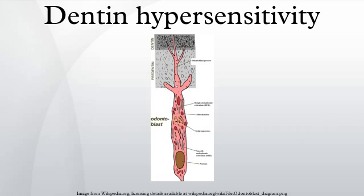Electrical — electric pulp testers. Mechanical/tactile — dental probe during dental examination, periodontal scaling and root planing, toothbrushing. Osmotic — hypertonic solutions such as sugars. Evaporation — air blast from a dental instrument. Chemical — acids, for example dietary or gastric acid, and etch during dental treatments.